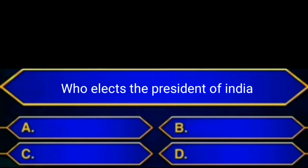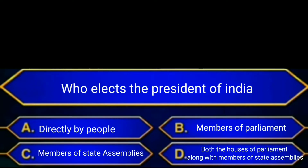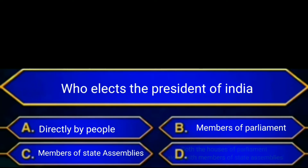Who elects the President of India? A. Directly by people, B. Members of Parliament, C. Members of state assemblies, D. Both the houses of Parliament along with members of state assemblies. Answer is option D: Both the houses of Parliament along with members of state assemblies.